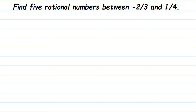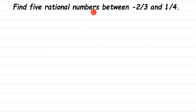Here's a question from rational numbers: find five rational numbers between minus 2 by 3 and 1 by 4. How do we find rational numbers between two given rational numbers? Remember, there are infinitely many rational numbers between any two rational numbers.